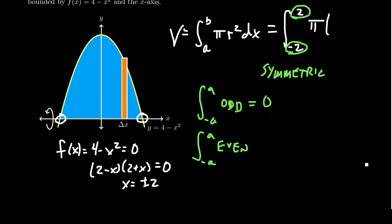On the other hand, if we take the integral from negative a to a of an even function, remember, even functions are those functions which are symmetric with respect to the x-axis. This should equal two times the integral from zero to a of that same even function. And so, given the symmetry of the region here, how it's symmetric with respect to the y-axis, the solid revolution will likewise be symmetric.